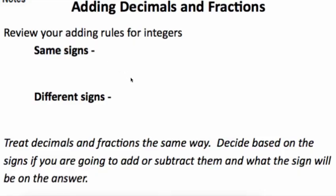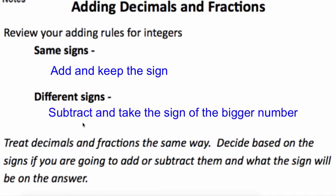So this lesson is on adding decimals and fractions. This time they're going to have negative signs, so we call them rational numbers. A quick review for adding integers: If they have the same signs you're going to add and keep the signs. If you have different signs you're going to subtract them and take the sign of the bigger or larger number.